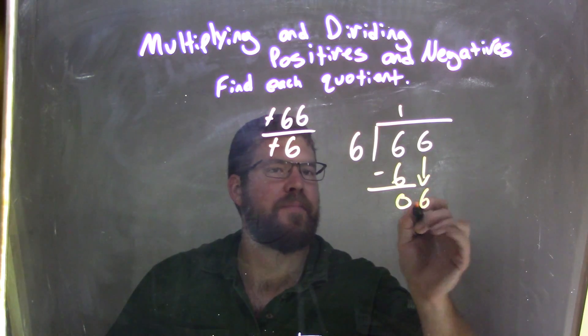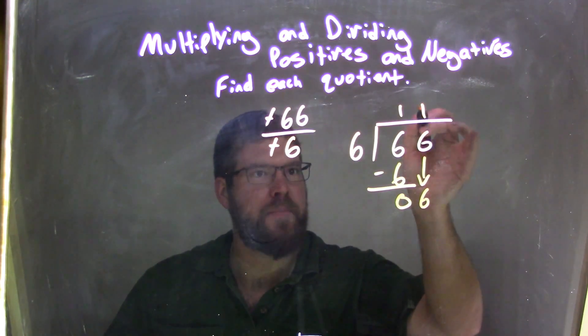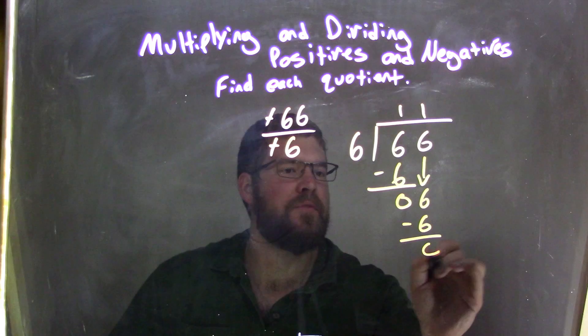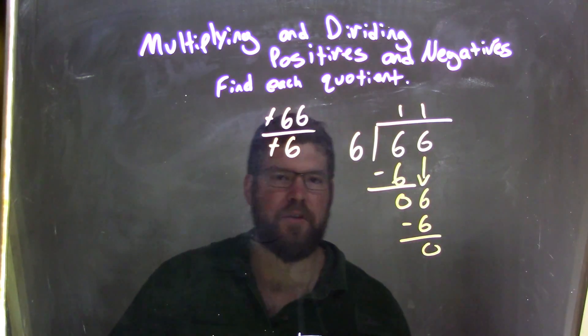We bring down this 6, and 6 goes into this 6 one time. 1 times 6 is 6, and we subtract it from 0. Now we're done, 11's our final answer.